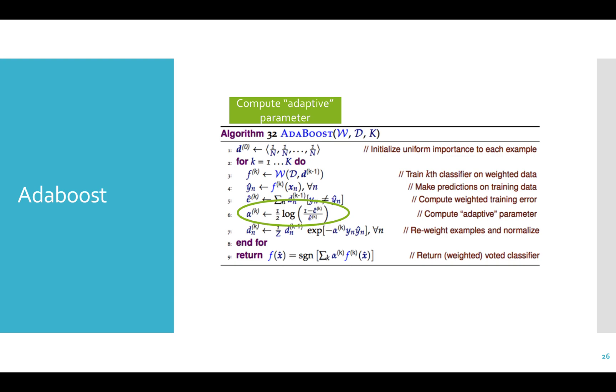Now we need to compute the adaptive parameter that helps us to calculate the new sample weights. We calculate this as 1 half log of 1 minus e to the k over e to the k. There is an alpha for each iteration of AdaBoost or for each weak learner, however you want to look at it. As long as w gets better than 50% training error, then alpha is going to be greater than zero. We will talk more about alpha when we finish the remaining lines of the algorithm.